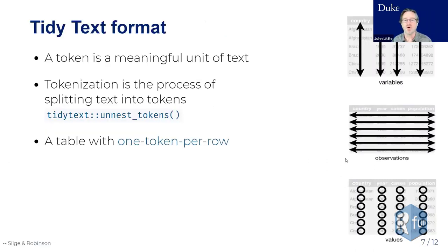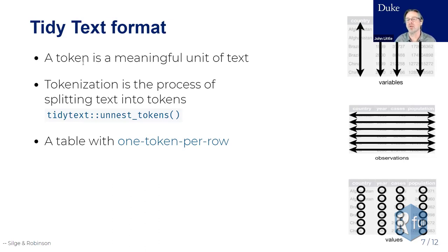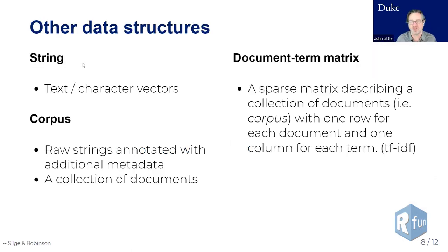What Silge and Robinson did is adapt Tidyverse techniques to their package called tidy text, built on the idea that a token is a meaningful unit of text. That token can be a single word, a sentence, a paragraph, a whole document, or even a tweet. Tokenization is the idea of splitting up your text into these tokens so you end up with a table that has one token per row.